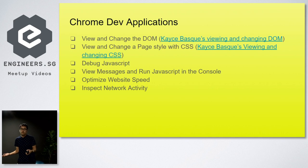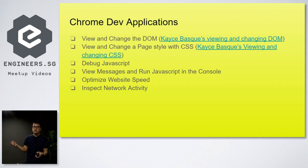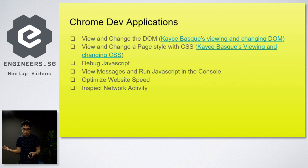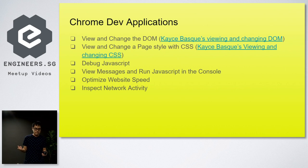What are the applications of Chrome DevTools? We can view and change the DOM and make necessary changes. We can test how a web page loads, and view and change a web page's style using CSS. We can also use Chrome DevTools to debug JavaScript, view messages and run JavaScript in the console, optimize website speed, change our code so that our website loads faster, and inspect the network activity of the website.